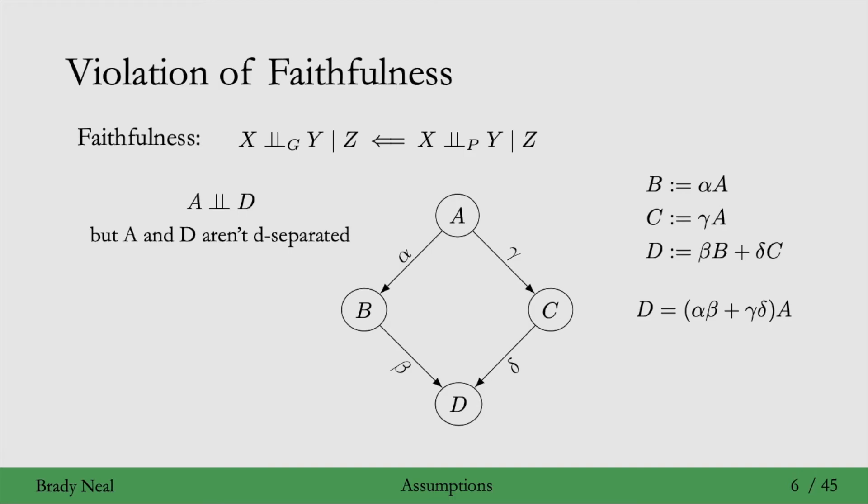The concrete version of the path canceling that we were graphically depicting with those blue and red arcs is if alpha times beta equals the negative of gamma times delta. So if this is the case, then this factor in front of a is equal to zero, meaning that the association that's flowing from a to d is zero.